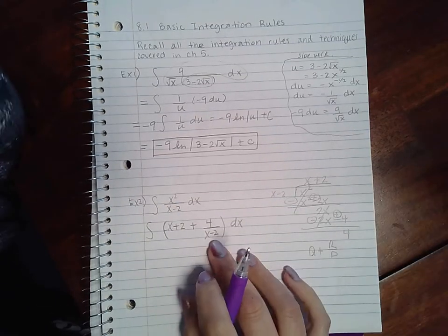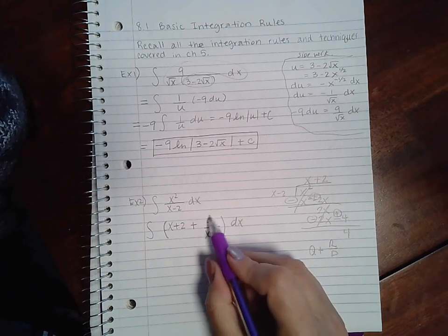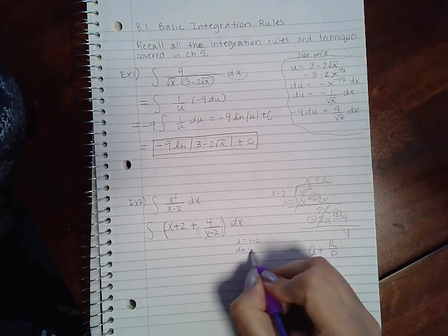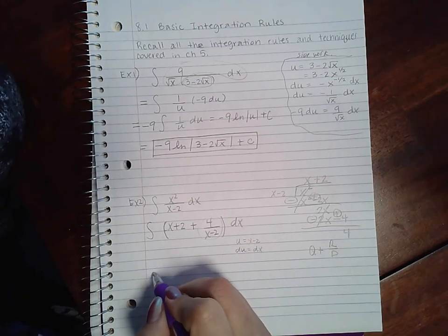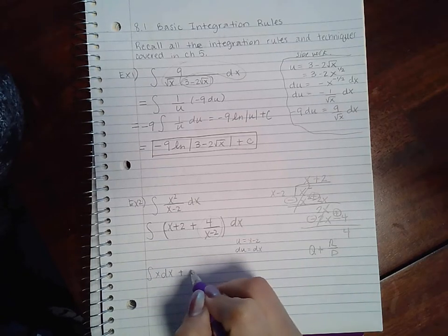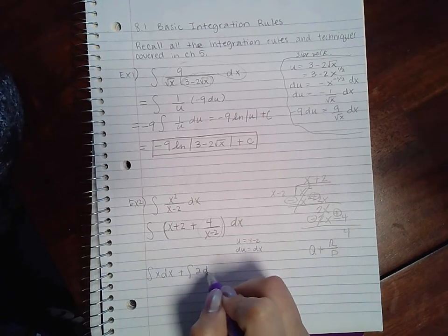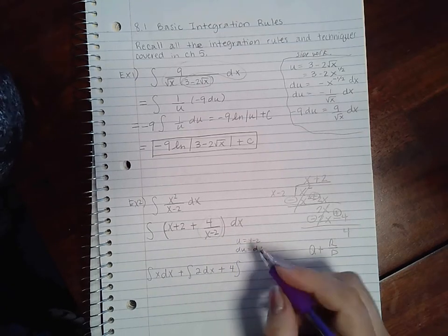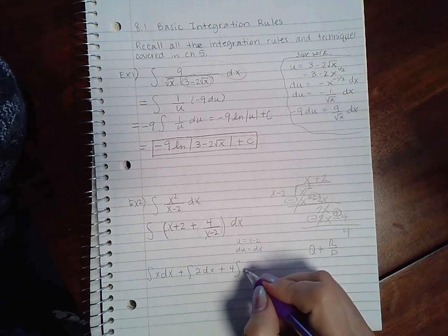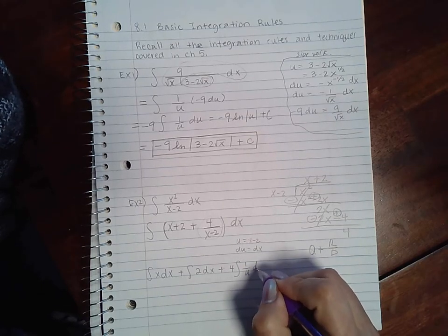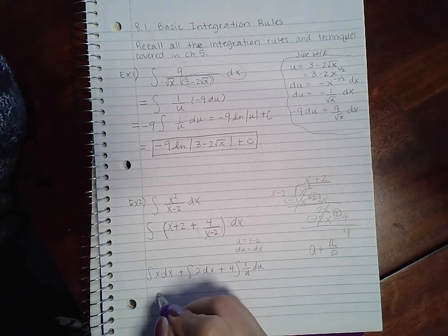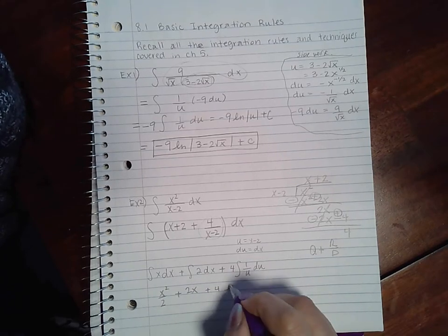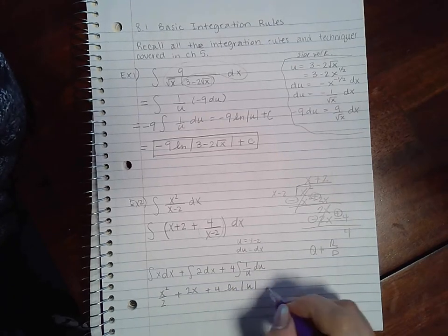So then now I can use u-sub for this part. u equals x minus 2, du would just be dx. And if I substitute—I can take the 4 out—and I have 1 over u du.